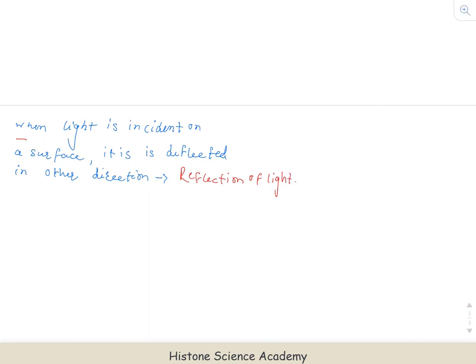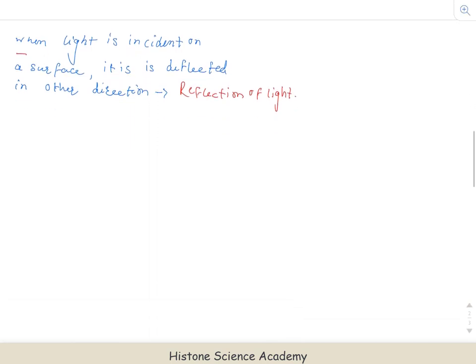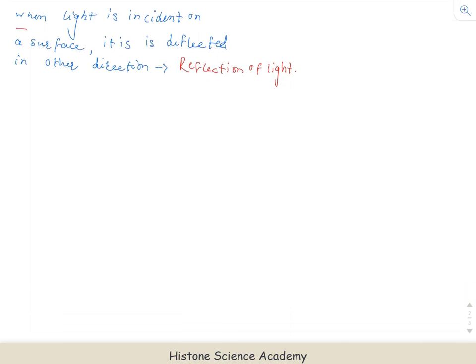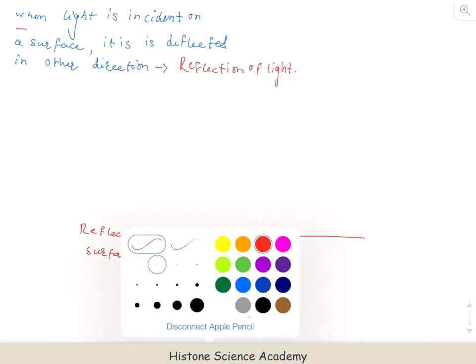Let's try to understand in simple terms. Whenever light is incident on a surface, that surface has to be a reflecting surface. Let me name it as a reflecting surface. It can be anything — for example, if you consider a mirror surface, you can consider it as a simple stainless steel sheet. You can consider it as a reflecting surface.